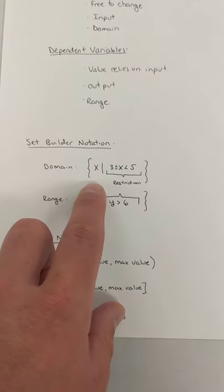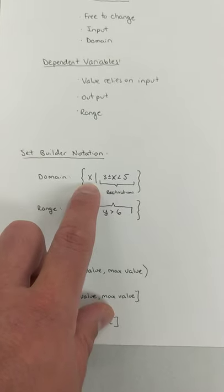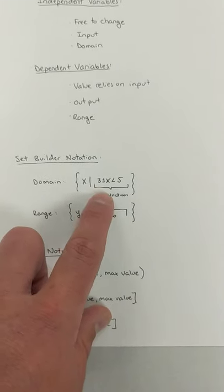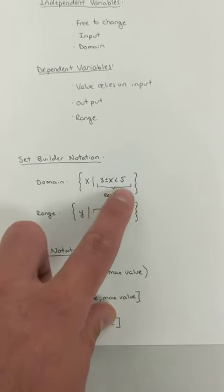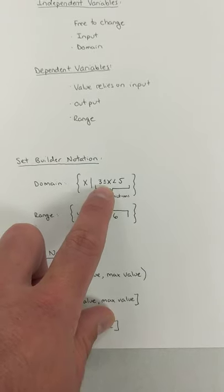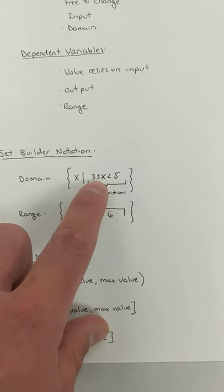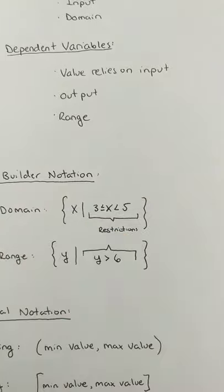So this would be read all values of x, such that, and then we put in our restrictions. I just made this up. I'm saying that it's between 3 and 5. We're including 3, and we're not including 5.